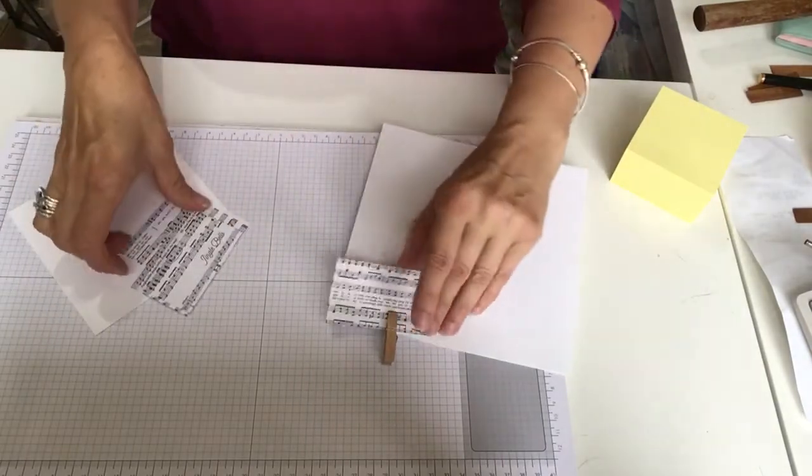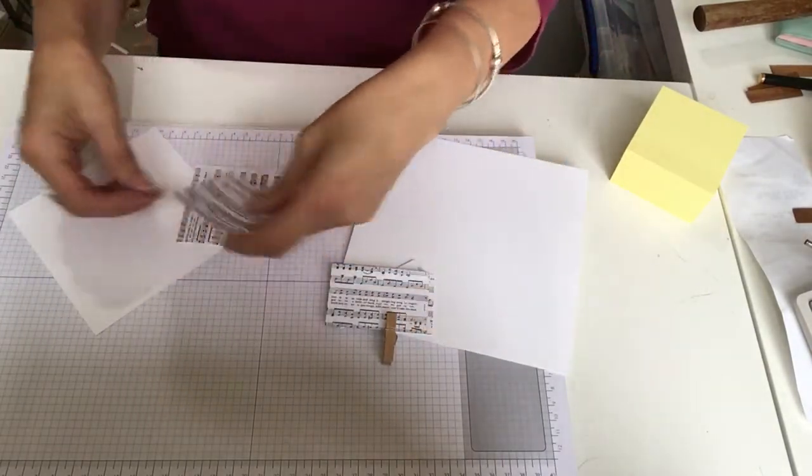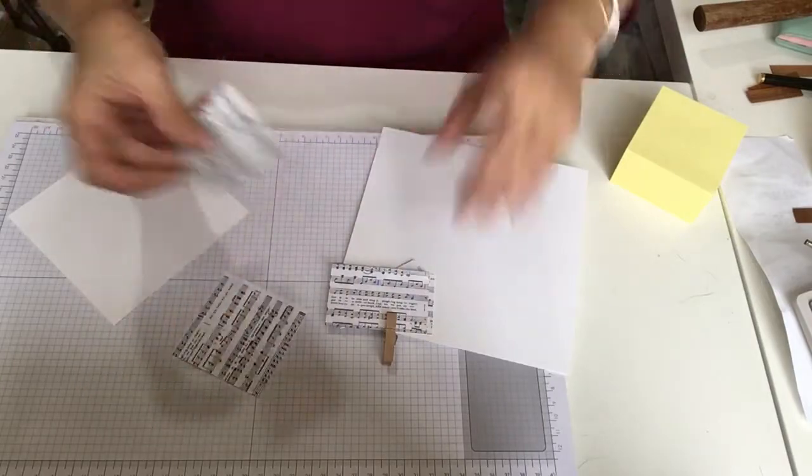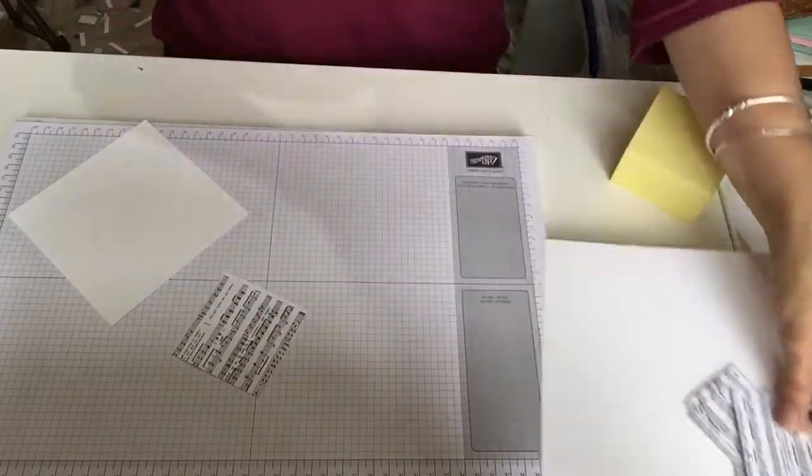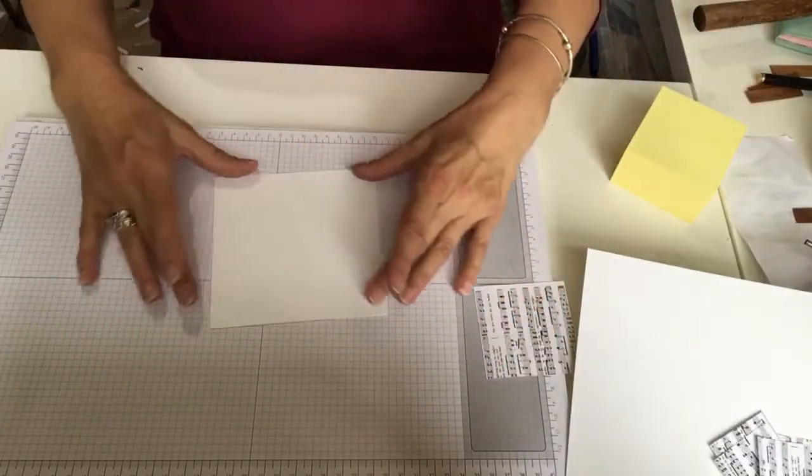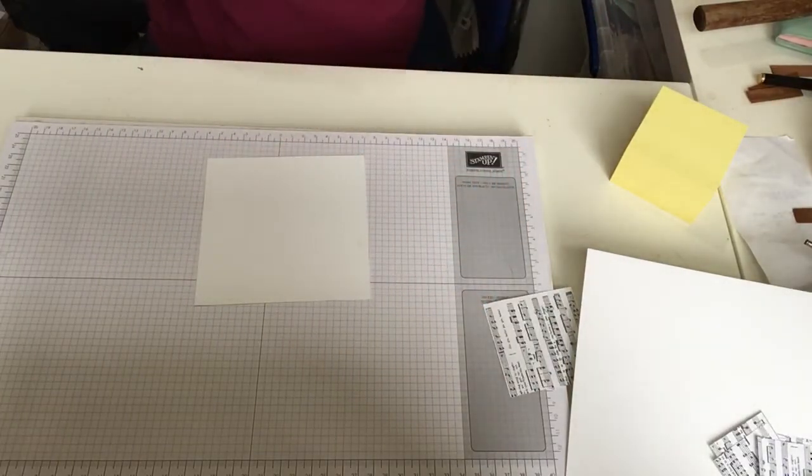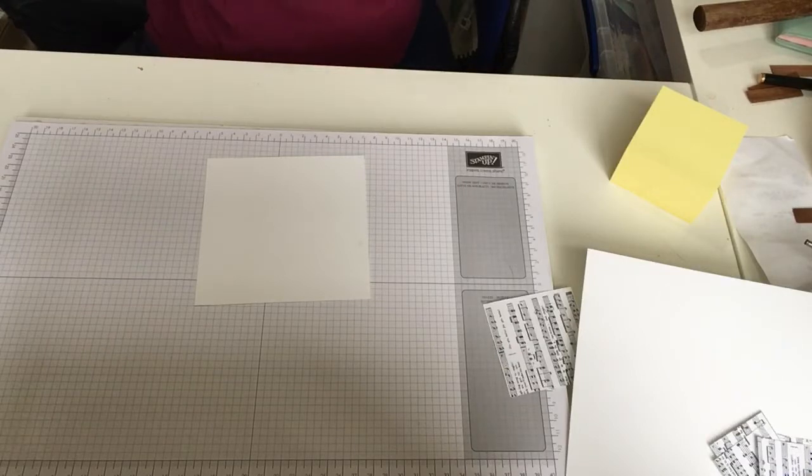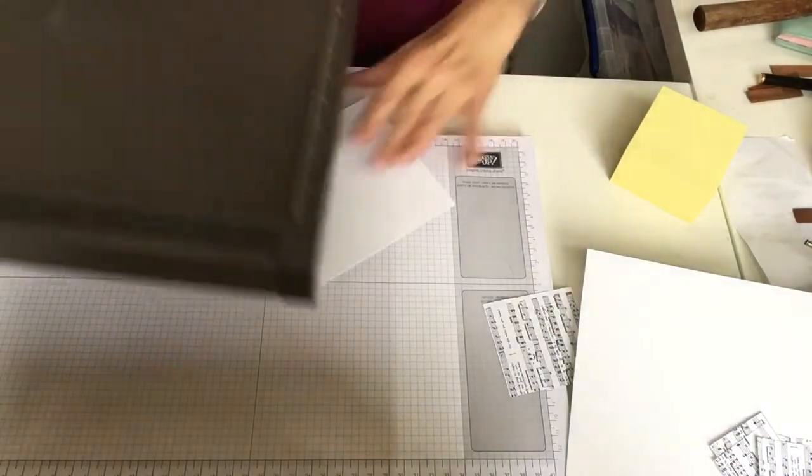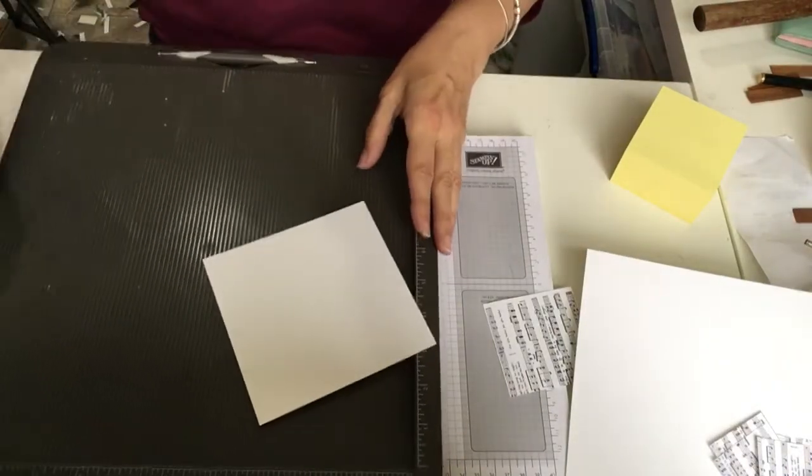I did them with designer series paper. I think it was retired DSP. And she really liked them, so she bought them all, which was nice. Now we need another piece of paper. I'm just going to start with the top, because we want the flower to dry and be completely dry before we put the lid on the box. So I'm just getting my Simply Scored, because that's the easiest thing for this.